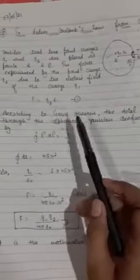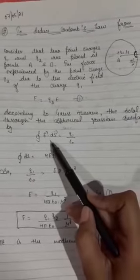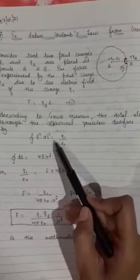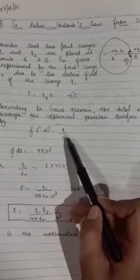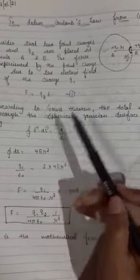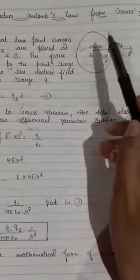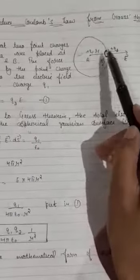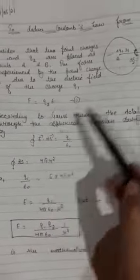Why I have taken q1 for electric flux? Because my q1 charge is enclosed in the surface, not q2. So due to q1 I will have the electric flux, so I have written the same.